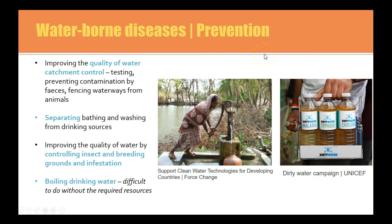To prevent the formation or spreading of waterborne illnesses, controlling water quality is really important. This means preventing contamination — making sure sewage is not mixed with fresh water, separating bathing and drinking facilities, controlling insects and breeding grounds for infestation, and boiling drinking water. That last one may not be applicable in a third world country without access to electricity, so prevention really depends on the resources available.